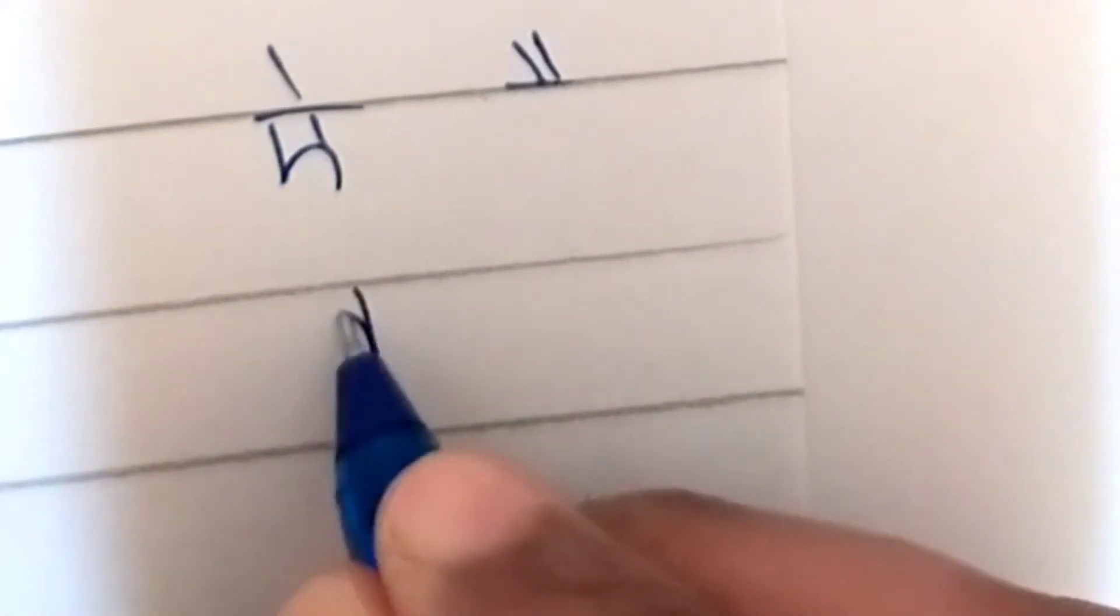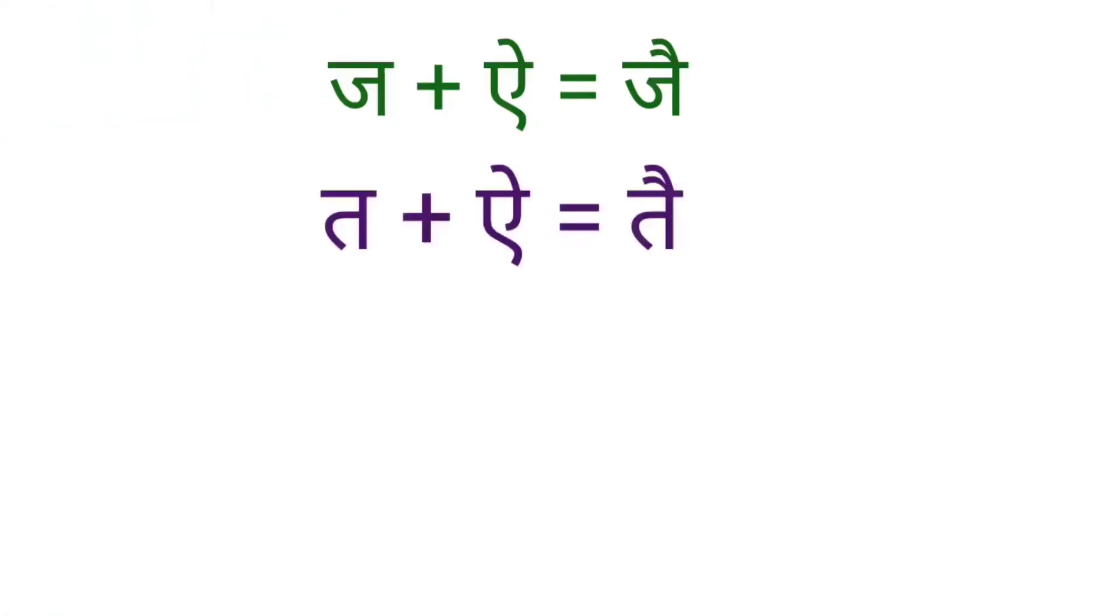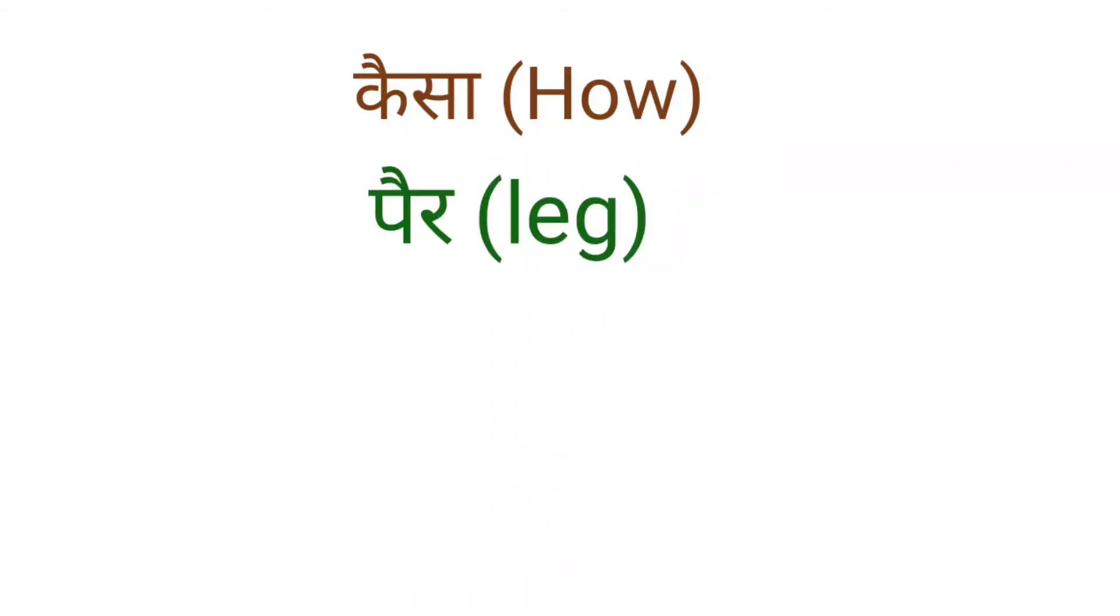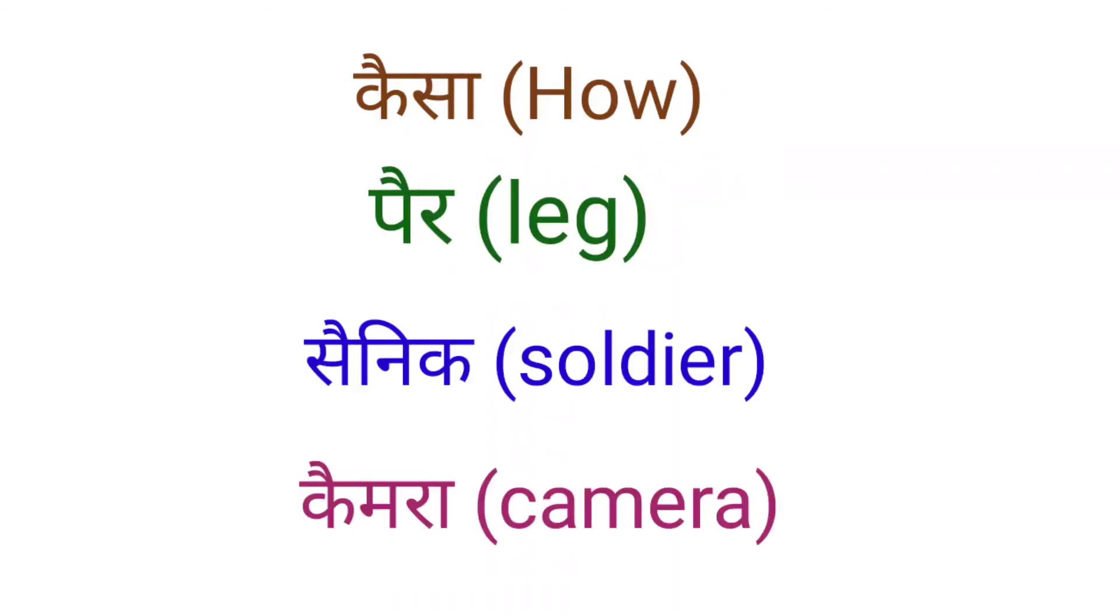Next vowel is I. This is the symbol for the sound. Kai, Jai, Tai, Sai, Wai. Keisa, Peir, Sai, Nik, Keimara.